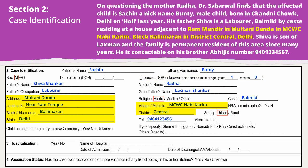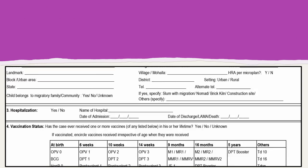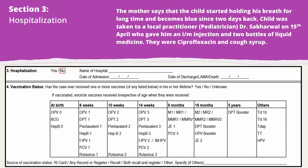Date of birth, address, and mobile number should be filled in correctly. Case identification details are important to trace the case for epidemiological investigation and for public health interventions. There is no history of hospitalisation in this case.